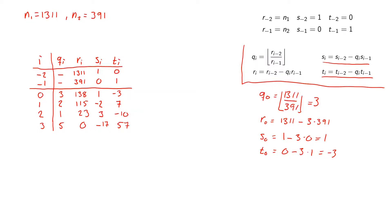So we have found our GCD, which is the remainder before the first 0 remainder. So here is the 0 remainder and this is the remainder before, so this is our GCD.